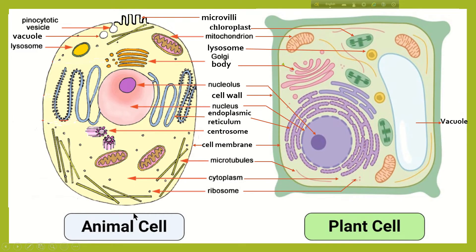This is an animal cell and this is a plant cell. Here we can see microvilli, chloroplast, mitochondria, and lysosome — these are lysosomes of the animal cell. We can also identify the Golgi body, nucleus, cell wall, and nucleolus.